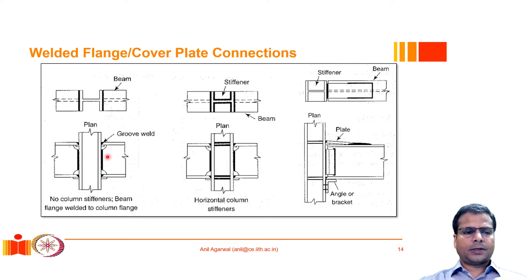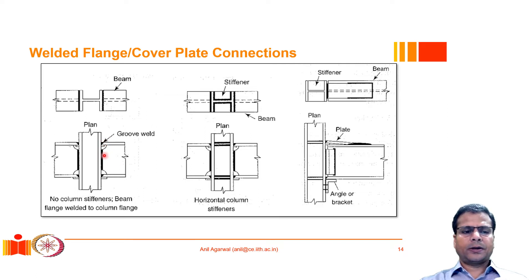It is not necessary to weld the web of the beam to the column. Even though the flanges are welded to the column, the web could also be bolted, because the mechanism of force transfer for the two parts of this connection are quite different. Therefore, it is possible to mix welds with bolts — bolts will be primarily designed to resist shear force and the welds will be designed to resist the bending moment.